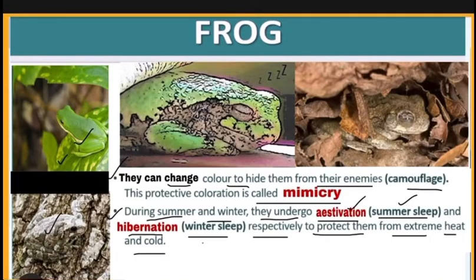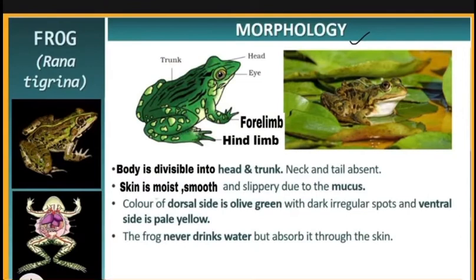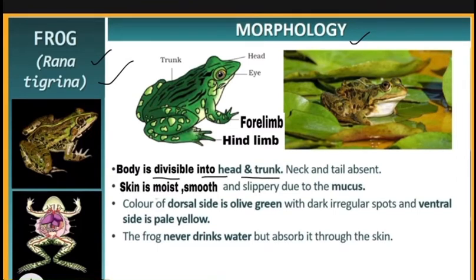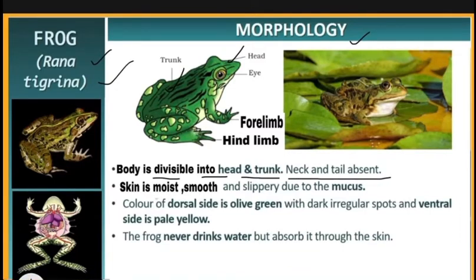Now let us check the morphology or external features of Rana tigrina. First, the body is divisible into head and trunk — there are two parts: the head region and the trunk region. There is no neck and no tail present.